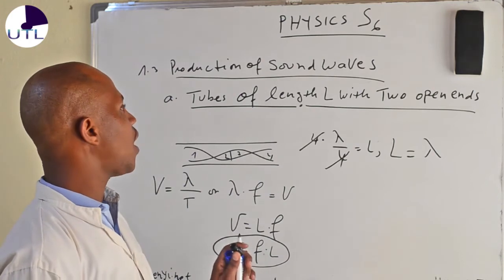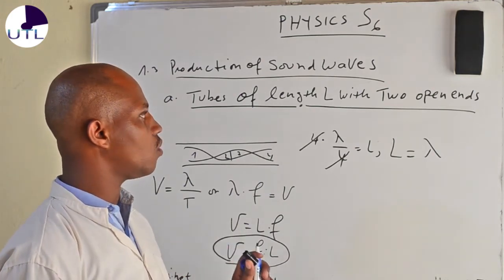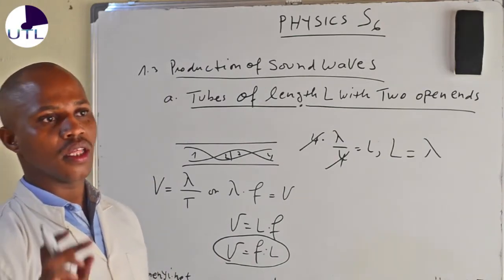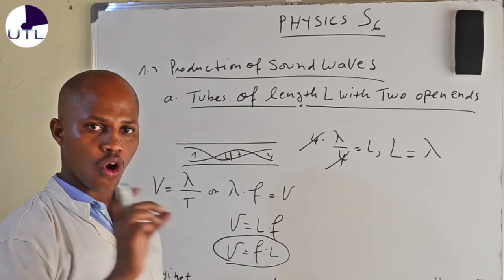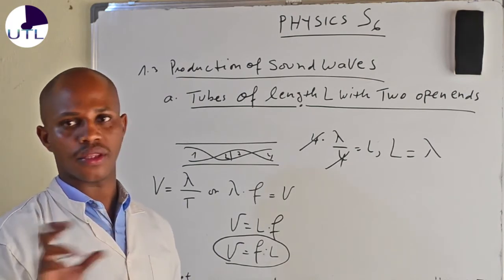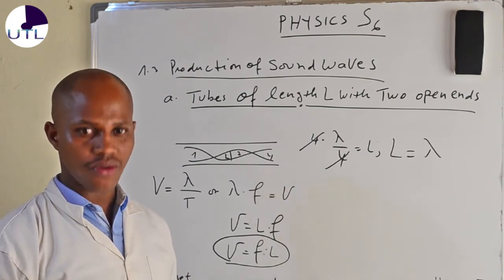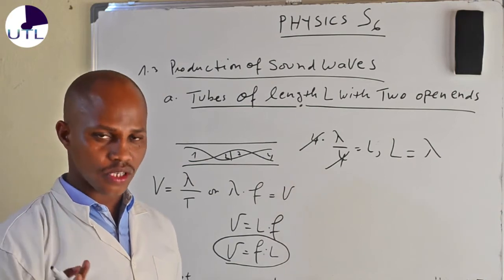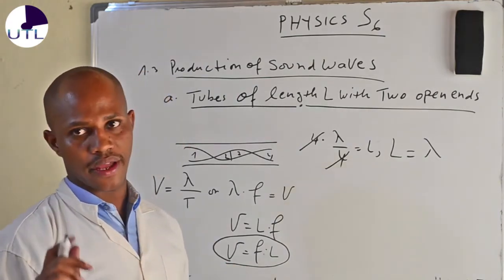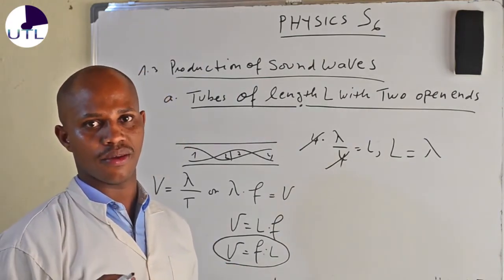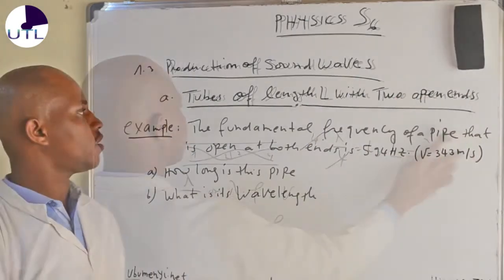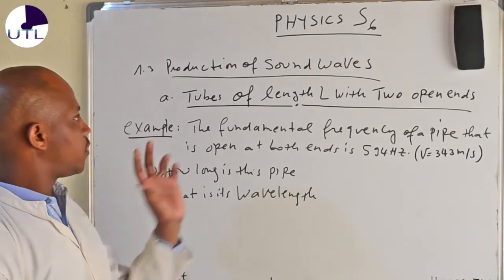We have seen that when you have tubes of length L with two open ends, it is a matter of knowing that the pipe should have two open ends and also have antinodes at both ends. That's the main understanding of tubes of length L with two open ends. Let us take an example, then we shall see how we can apply this.